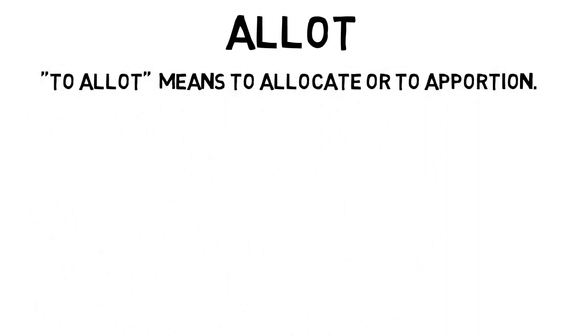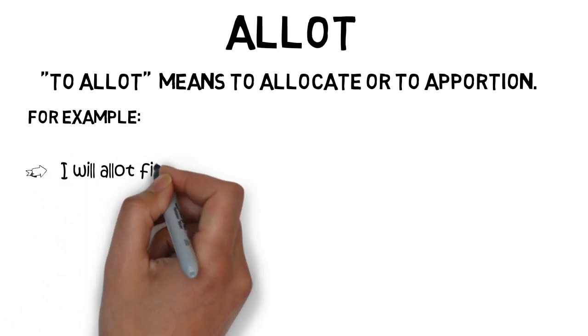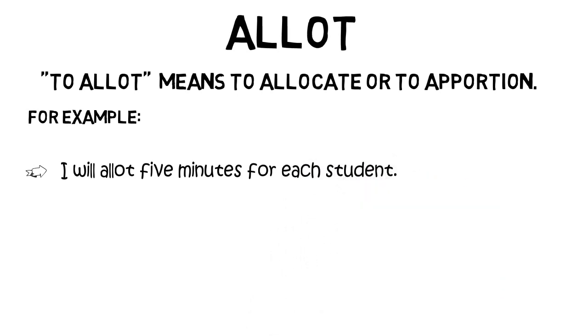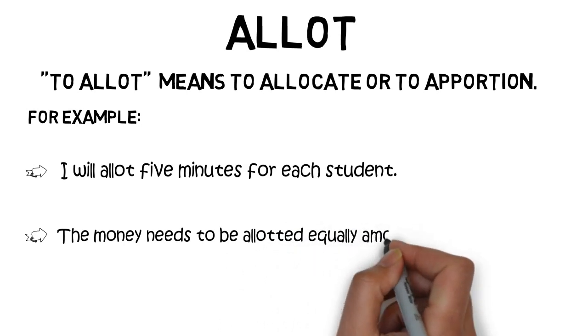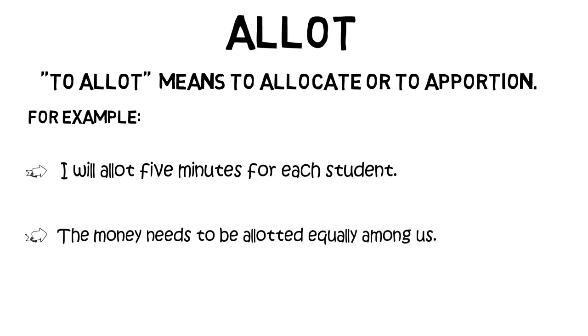Next, let's look at allot with two L's. This one is a verb, and it means to allocate or to apportion. Let's look at some examples. I will allot five minutes for each student — I will allocate five minutes for each student. The money needs to be allotted equally among us — apportioned equally among us.